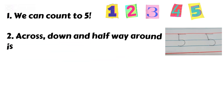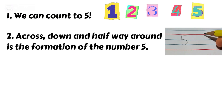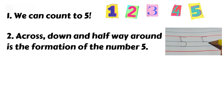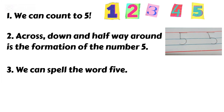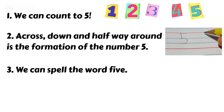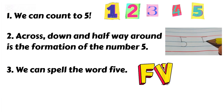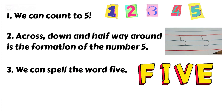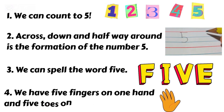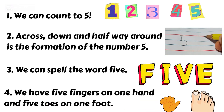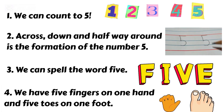We can write the number five — we go across, down, and halfway around. We can spell the word five. Spell it with me: F-I-V-E. We have five fingers on one hand and five toes on one foot.